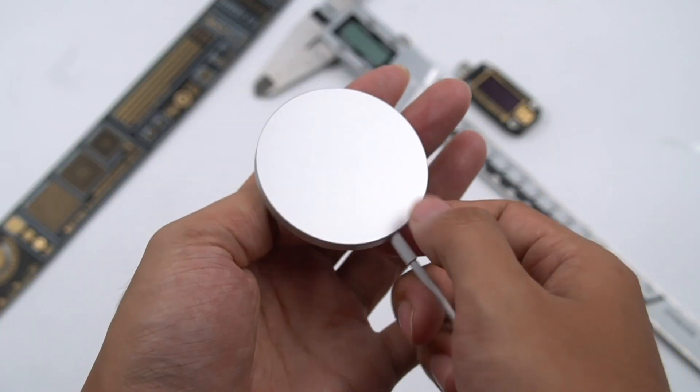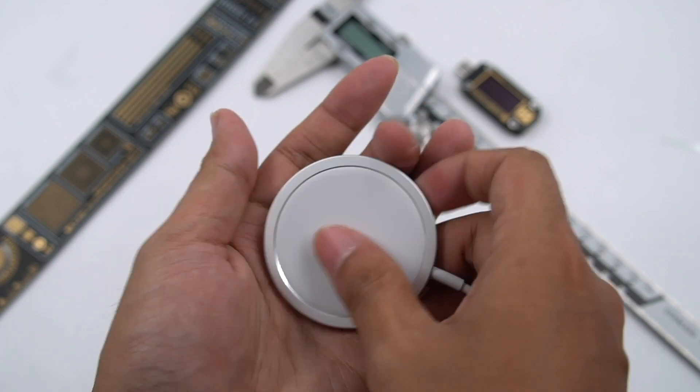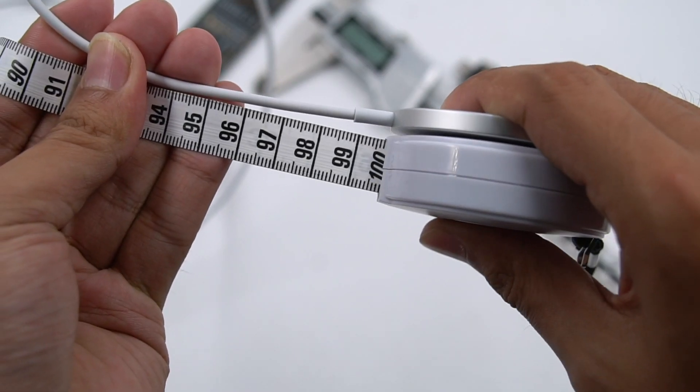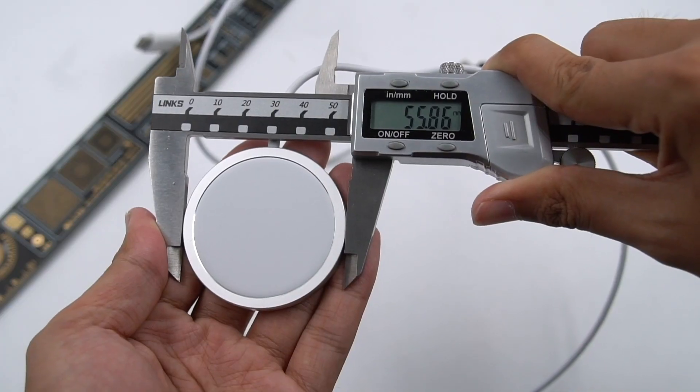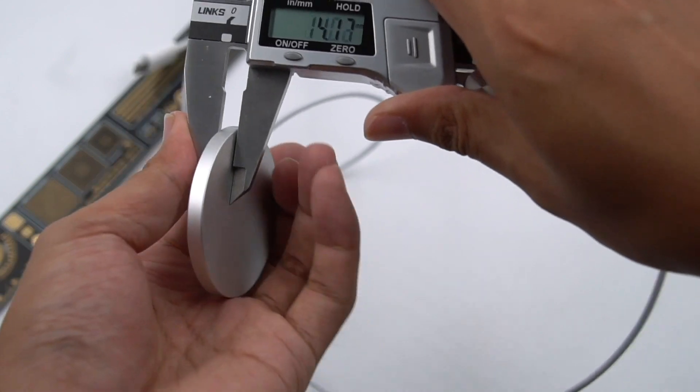The bottom and edge of the charging pad adopt an aluminum alloy shell. The top surface's rubber feels like skin. The length of the cable is about 1 meter. The diameter is about 56mm, and the thickness is about 5mm.